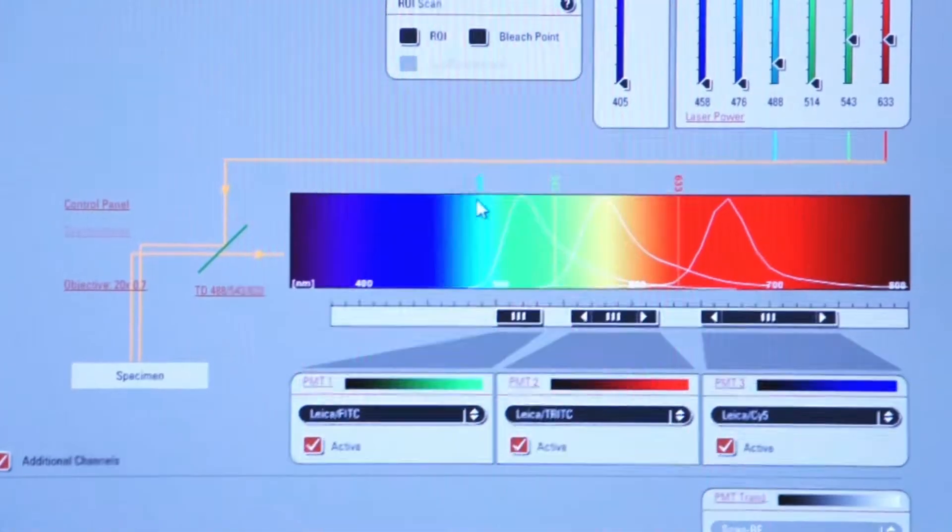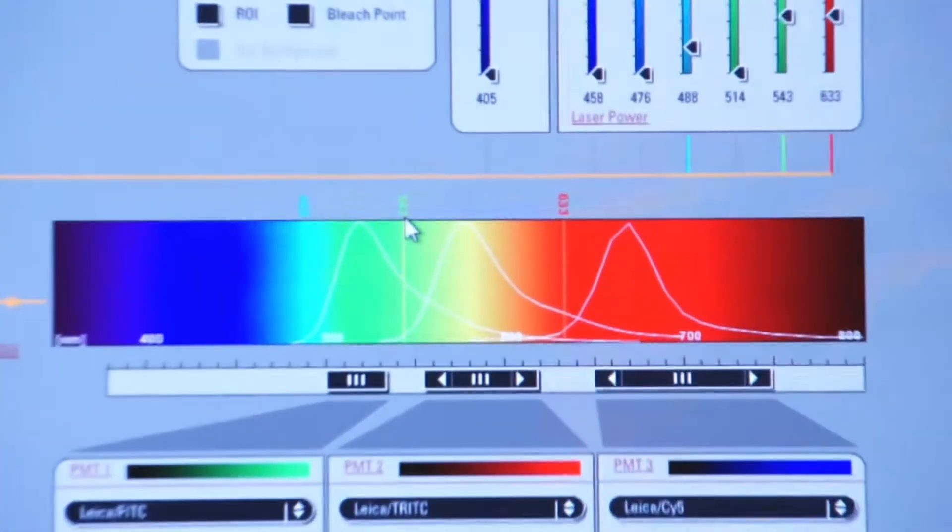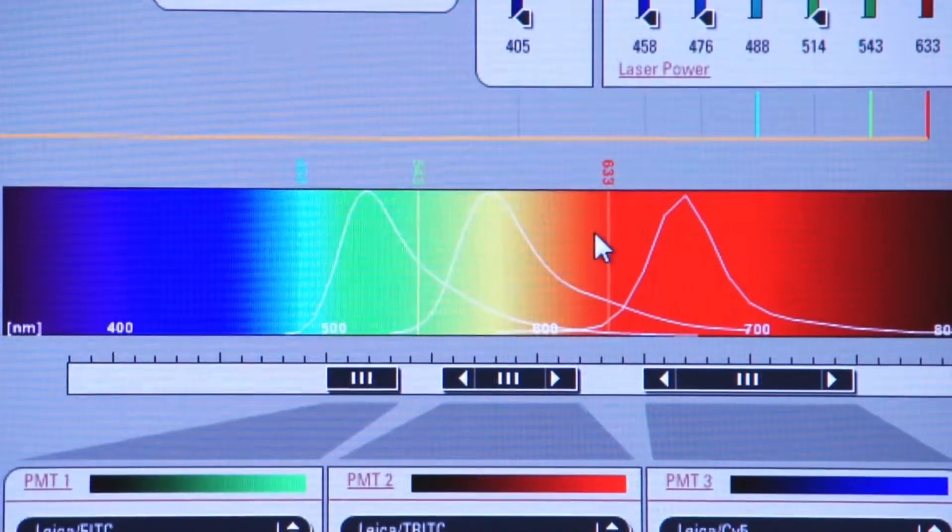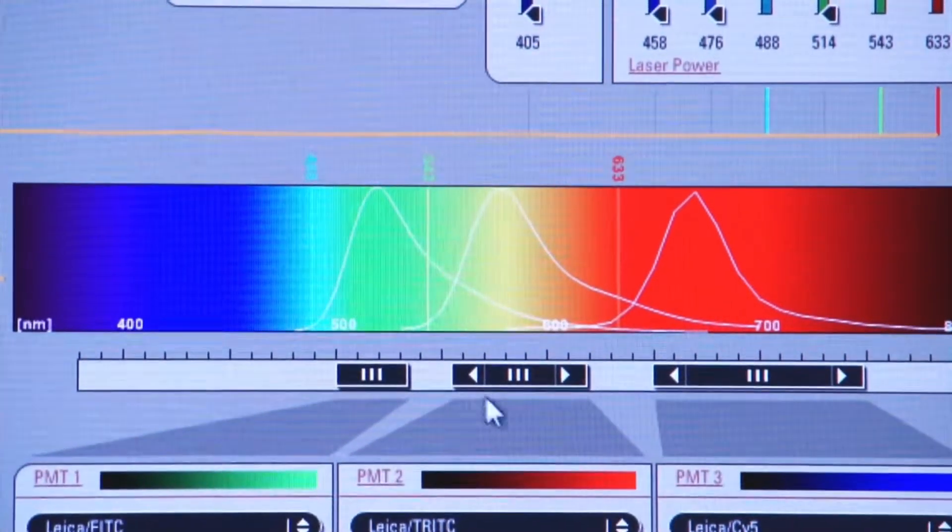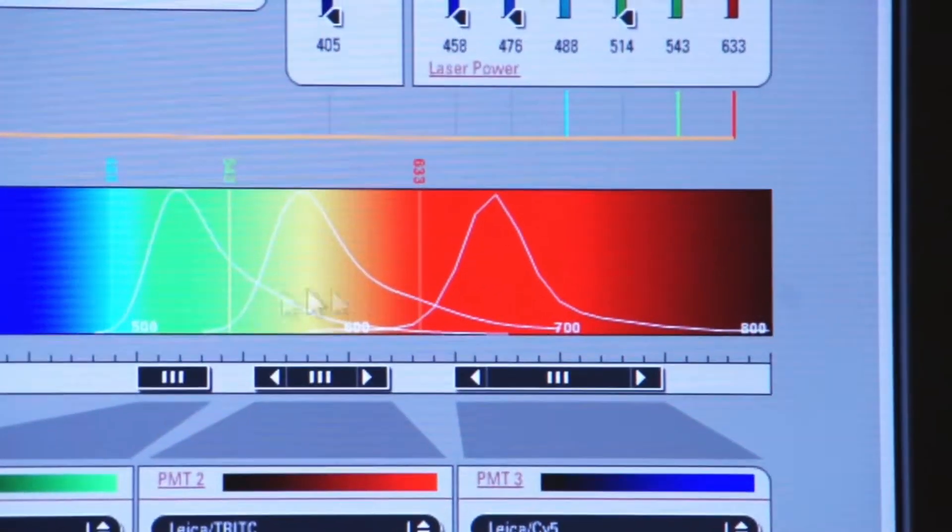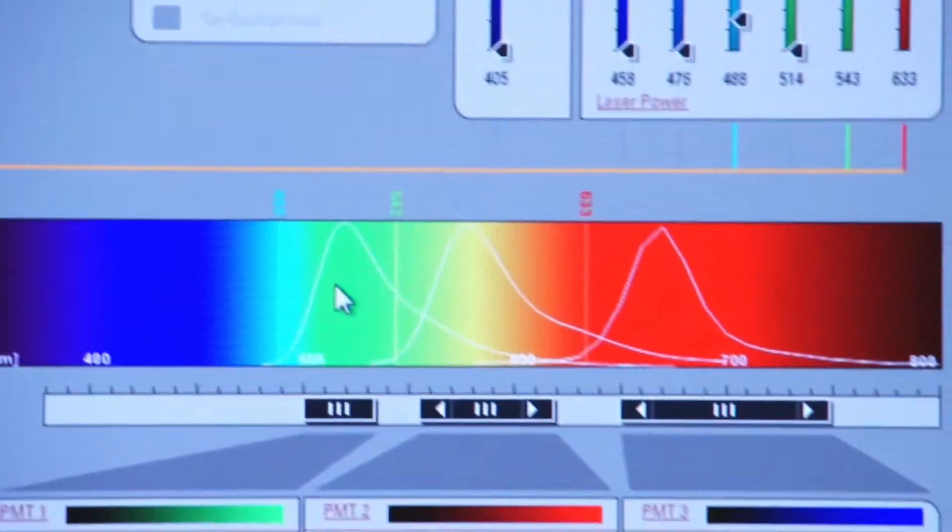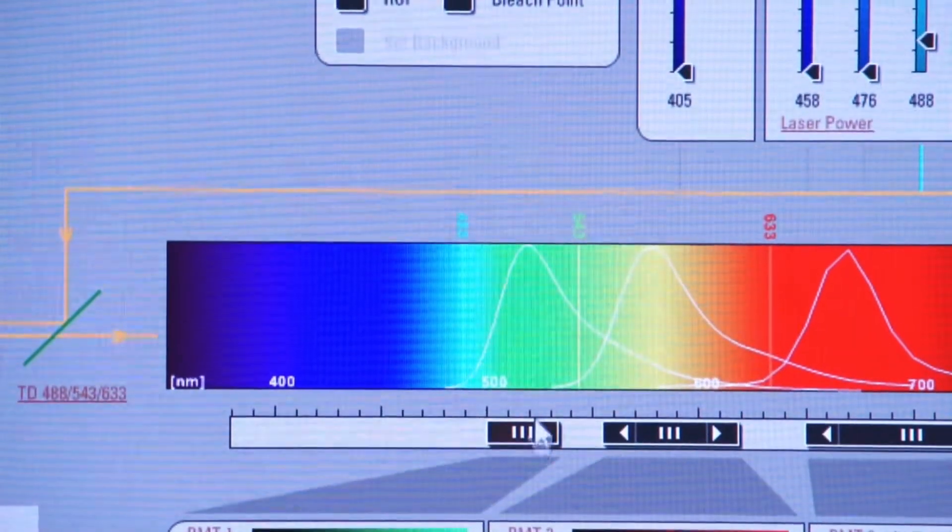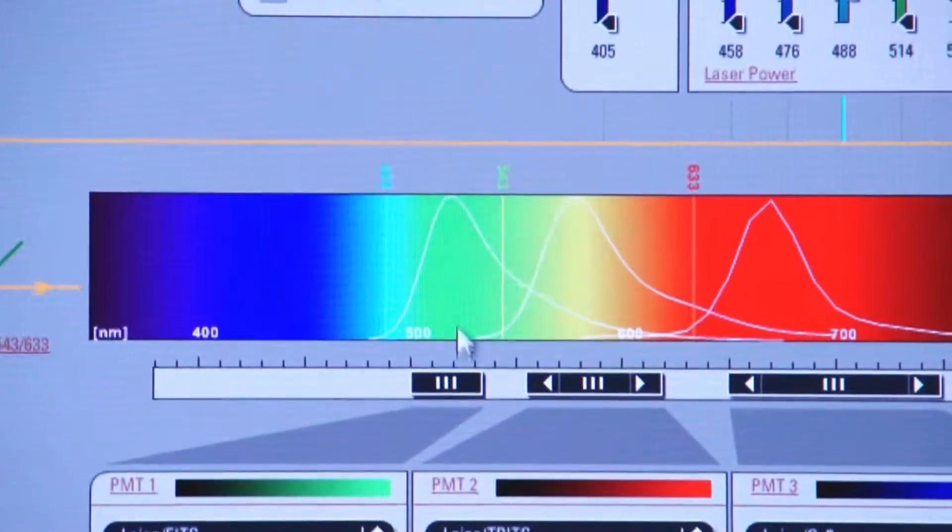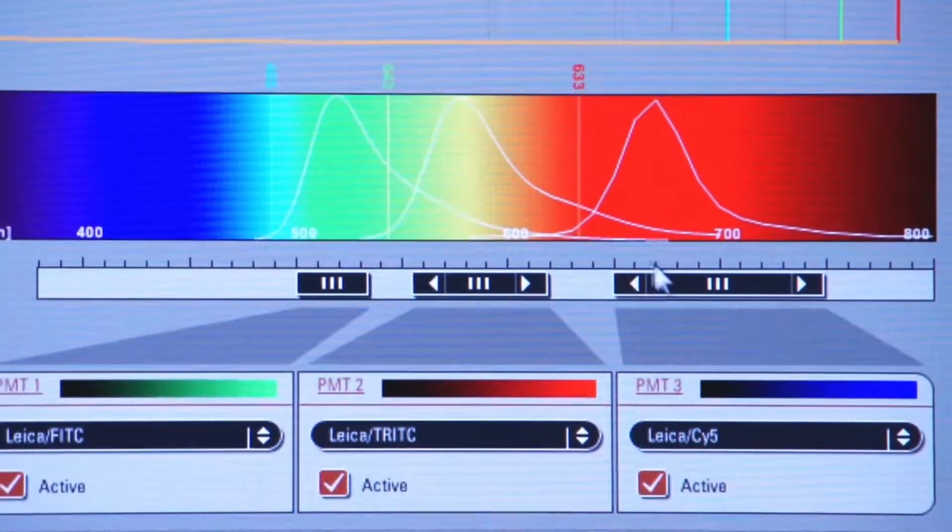But you see a 488 laser line, a 543 laser line, and a 633 laser line all illuminated on our spectrum. You also see the various emission curves as a result of the excitation based on these laser lines. And concurrently, we have photomultiplier tubes set below this graph where the emission is going to take place. This PMT is collecting here, this PMT is collecting here, and this PMT is collecting here.